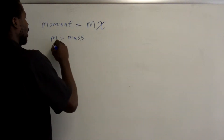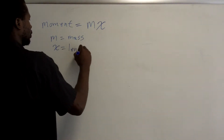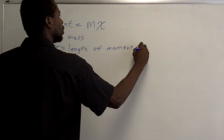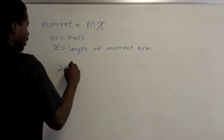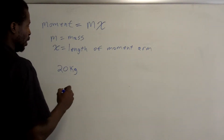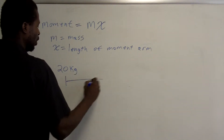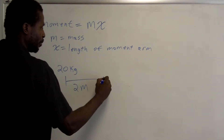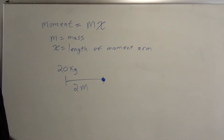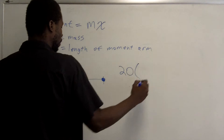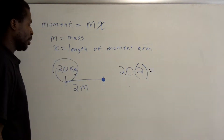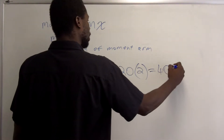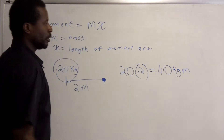For instance, if you have a 20-kilogram weight at a distance of two meters from some point in space, and you want to calculate the moment of that 20-kilogram mass about that point, you take 20 kilograms and multiply it by the length of the moment arm — the distance from the mass to the point. The moment is 40 kilogram-meters.